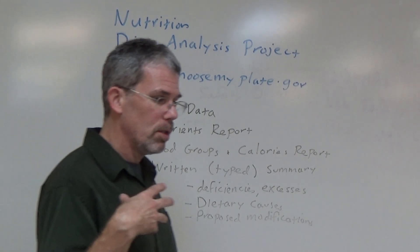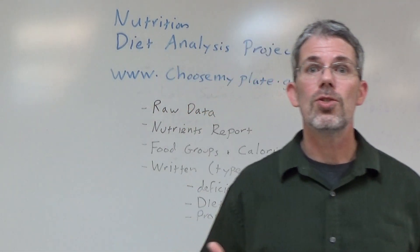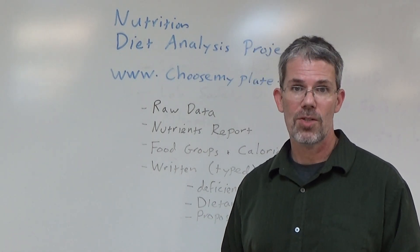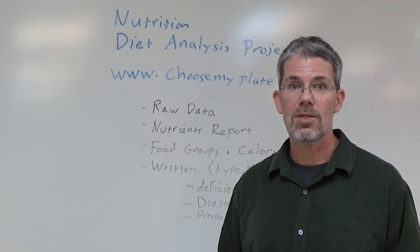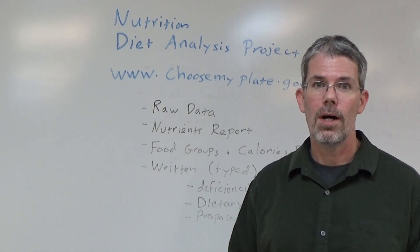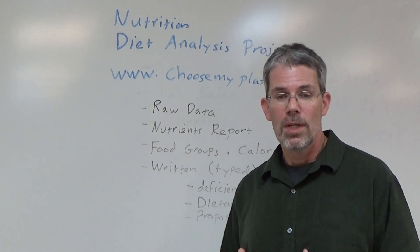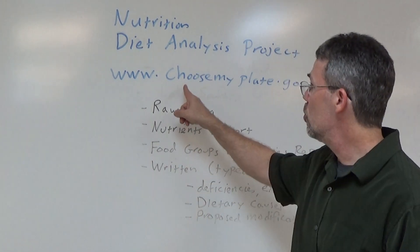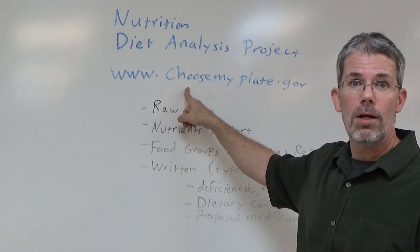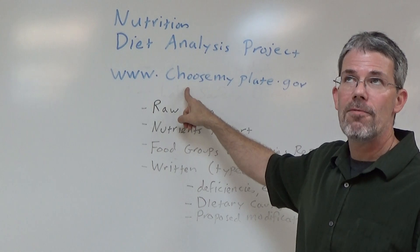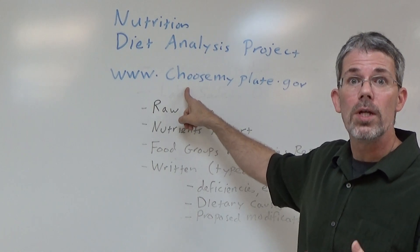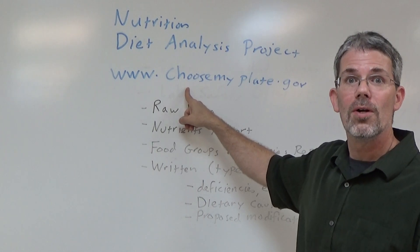The first thing you do is write down everything you've consumed in as much detail as you can during the time that you're doing the analysis. The more detailed the better. When you're finished with that, you're ready to get on to the site. You'll need to build a profile and tell a little bit about yourself. They have a tool called SuperTracker where you get to enter your food and drink.